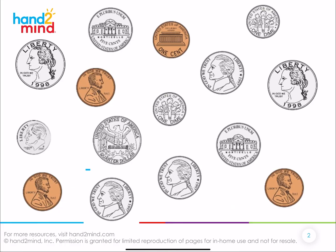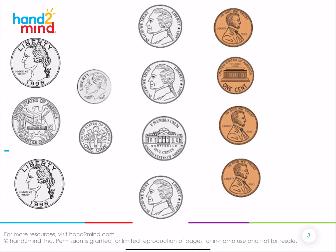Today we're going to be looking at lots of different coins and we're going to be able to identify these coins. So here is what we're going to do. I want us to take these coins and we're going to sort them. One thing I notice is I might sort them by color. Do you see some different colors? I could also sort them by size. Do you see different sizes of coins? There's different sizes of coins. So here's a way to sort them. I took all these coins and I sorted them.